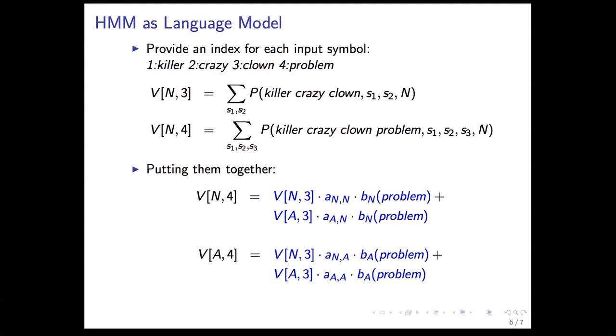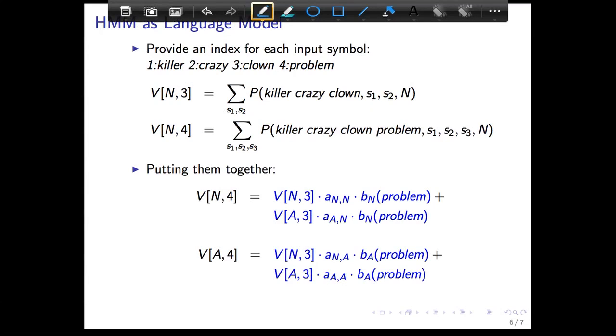Putting them together, what we have is V of N comma 3, and we want to reach an N. So we go from an N to an N using the probability of transition of N comma N. Since we end up in an N, we generate 'problem' with N.